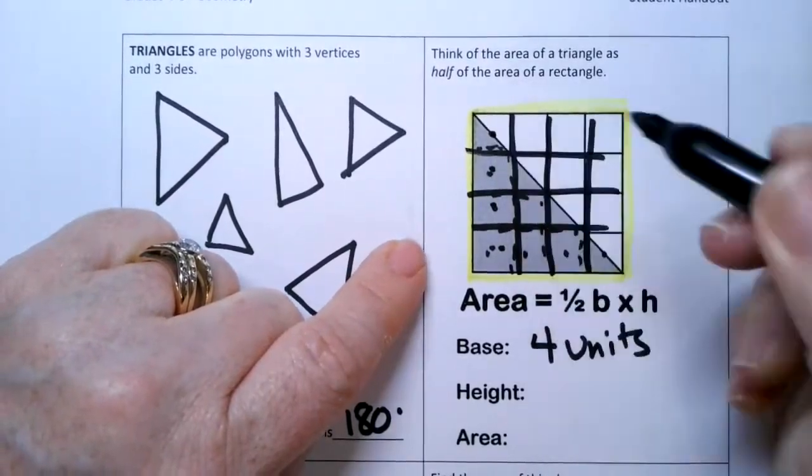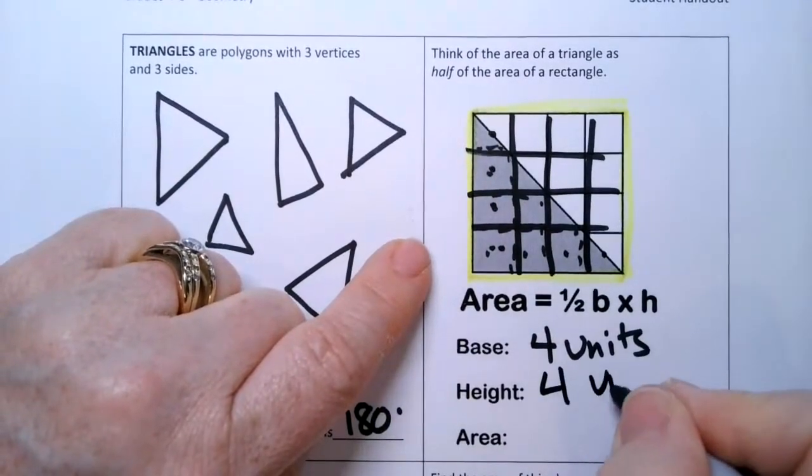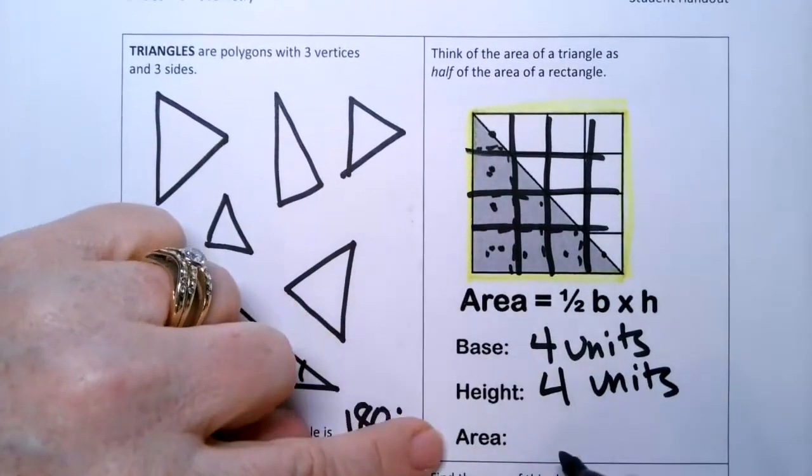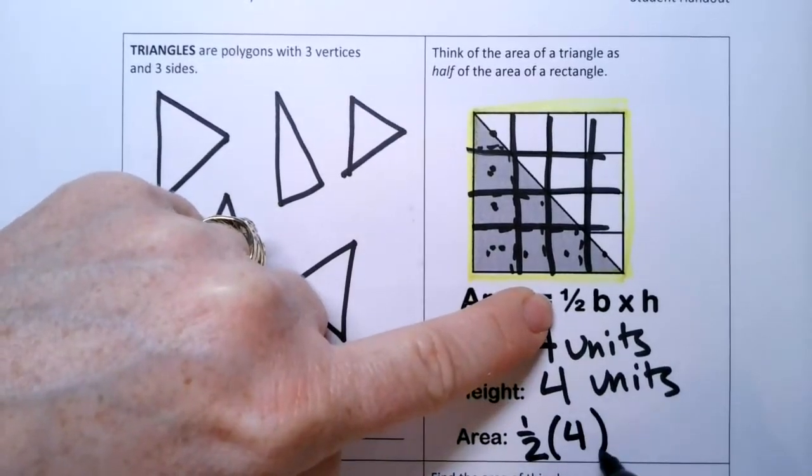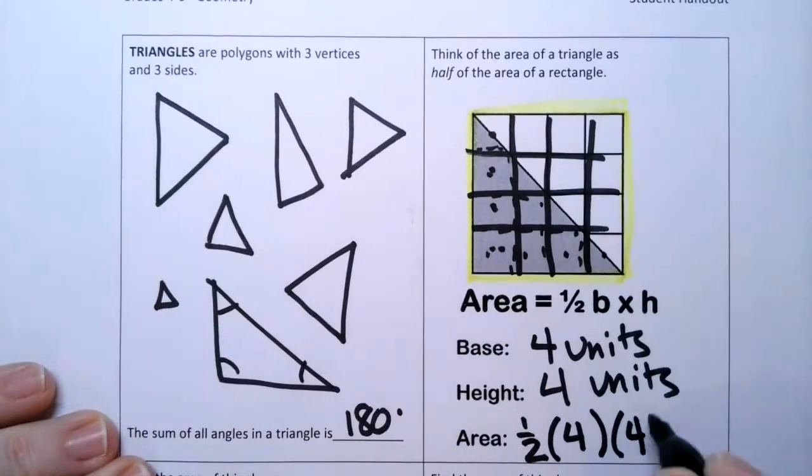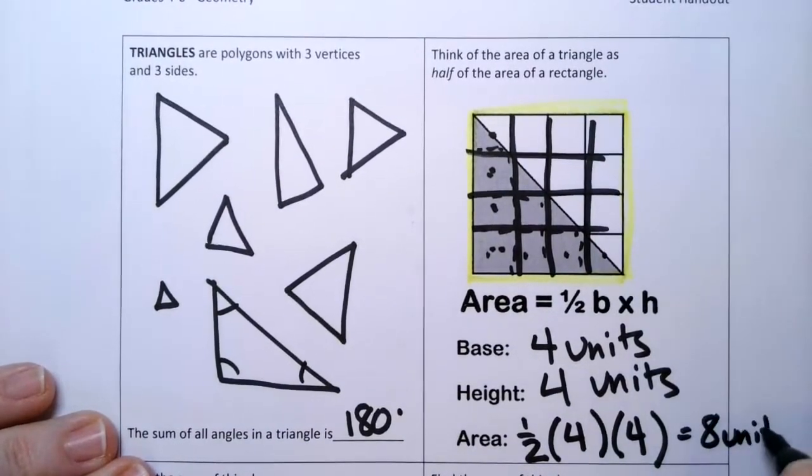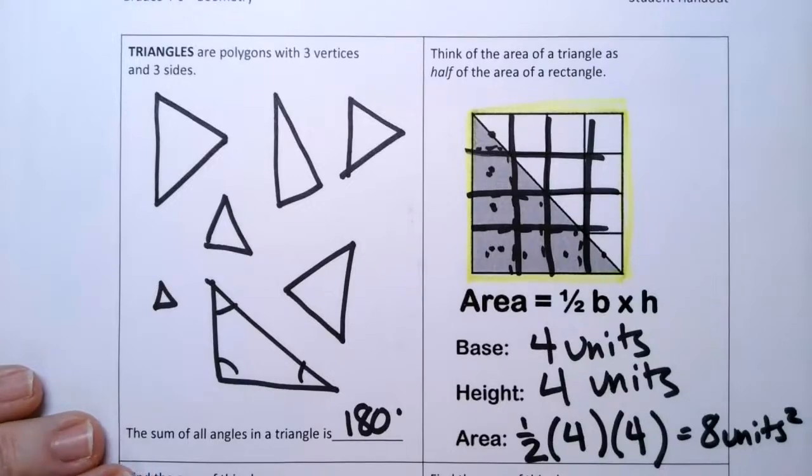So it's one, two, three, four for the height. So the area is going to be, don't forget the one half, one half base, four, and the height is four. Four times four is 16, divided by two is eight, and it's eight units squared.